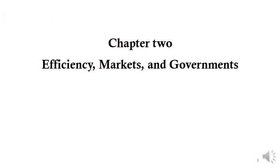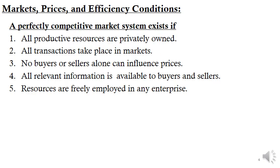Chapter 2: Efficiency, Markets and Government. We started chapter 2 by differentiating between positive and normative economics. Efficiency is a normative criterion satisfied when resources are used in such a way as to make it impossible to increase the well-being of one person without reducing the well-being of another. Therefore, the marginal conditions for efficient resource allocation require that the marginal social benefit of a product must equal its marginal social cost. In a system of perfectly competitive markets, an efficient economic system allocates resources so as to satisfy this condition.